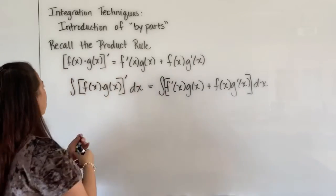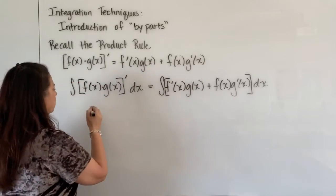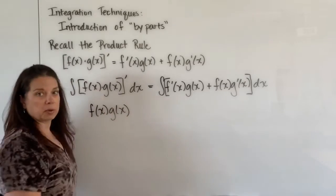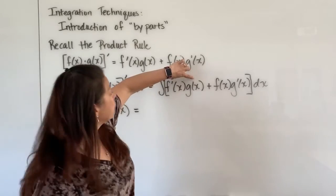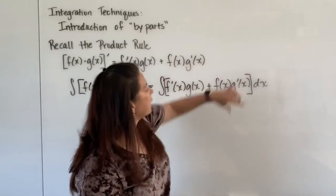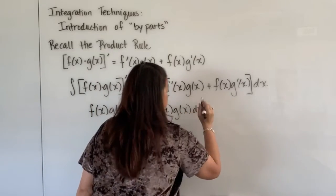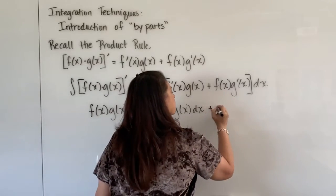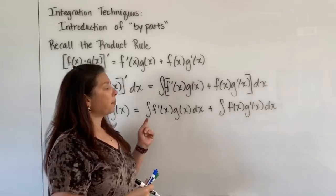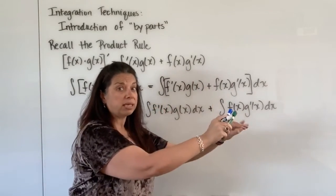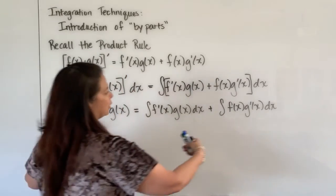First of all on the left hand side when I integrate something that I was taking the derivative of originally, those two processes undo each other and what falls out is merely my product f(x) times g(x). On the right hand side, let's go ahead and distribute that integral symbol on this first expression f'(x)g(x) and also on the second expression f(x)g'(x). That would look like the integral of f'(x)g(x) dx plus the integral of f(x)g'(x) dx, and we're allowed to do that because of properties of integration.